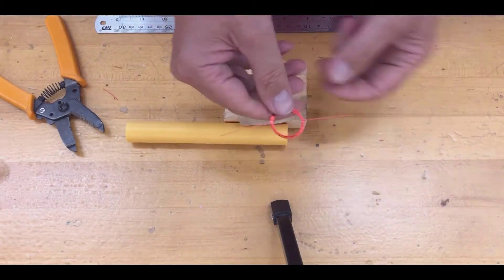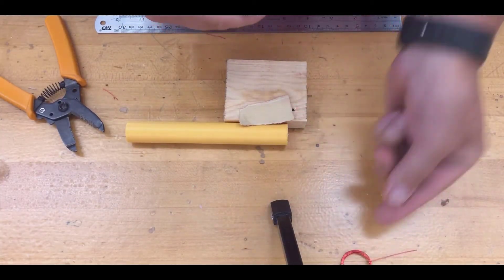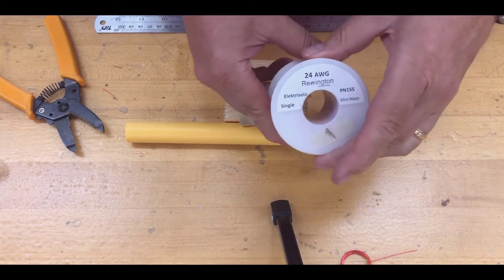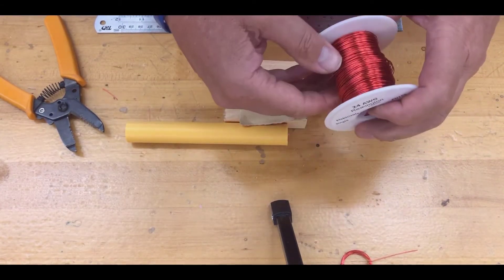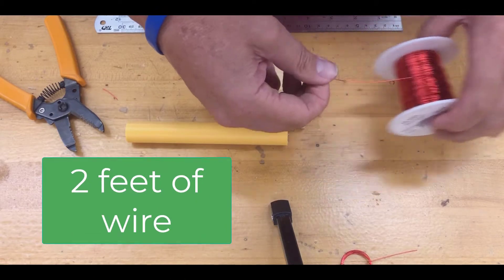Okay, we're gonna make a coil. We're gonna make something that looks like this. You're gonna start with some 24-gauge enamel painted wire. You need two feet of this.